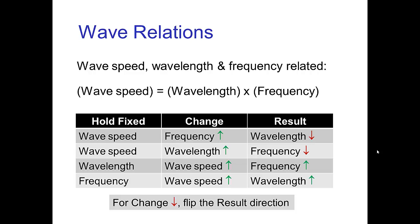Here are some examples in this table. If we hold the wave speed fixed and we increase the frequency, then the wavelength of the resulting wave goes down, so the waves get shorter. If we hold the wave speed fixed and we increase the wavelength, then the frequency goes down. And some other examples here, but let's look at some specific physical consequences of these relations.